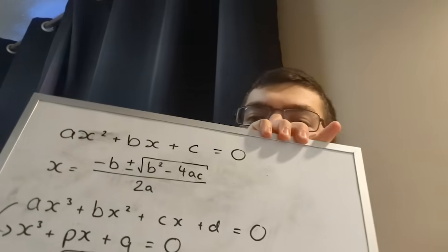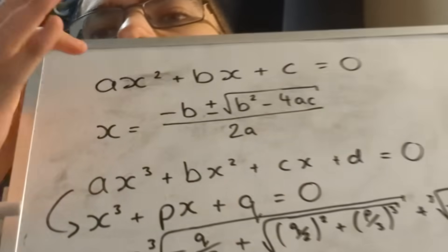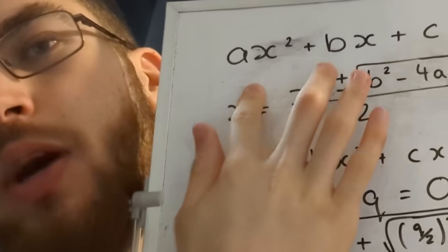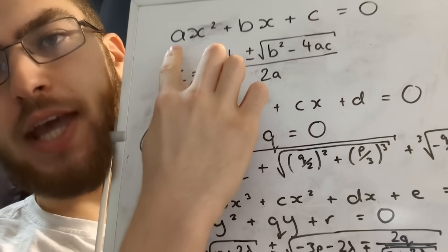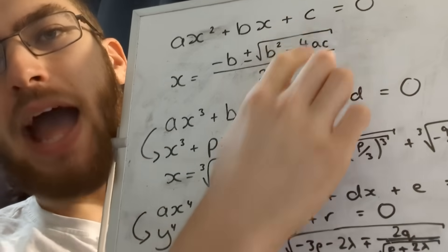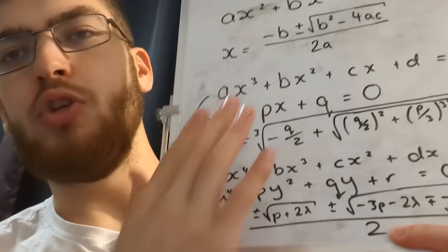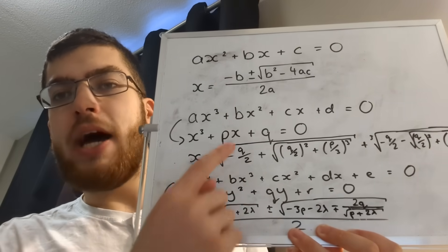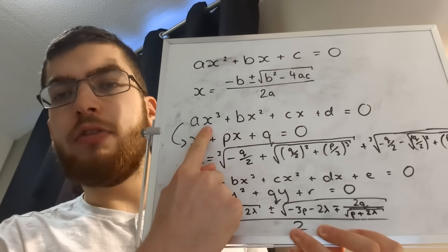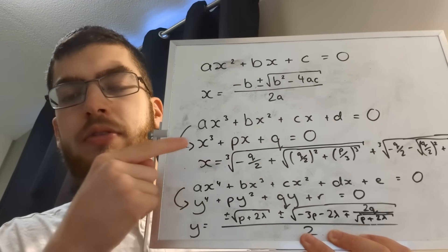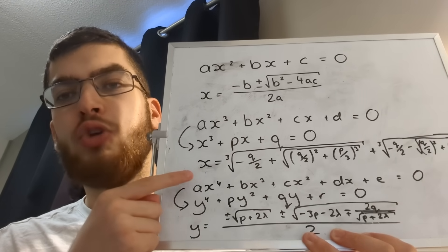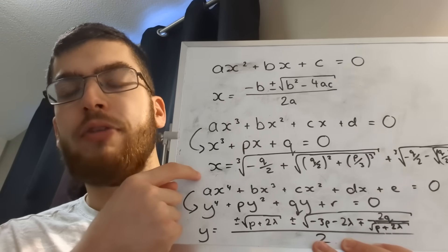A quadratic equation is any equation where the highest power of x is 2. So this is an example of a quadratic equation — we usually call the coefficients a, b, and c. And to solve a quadratic equation, you use something called the quadratic formula, which is here. Now for cubic equations, the highest power is 3, and you reduce it down to this here by removing the x squared term. And then you can use this equation to find x on its own.